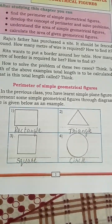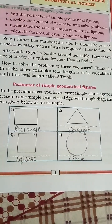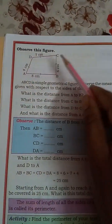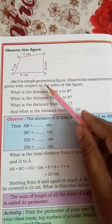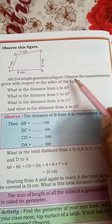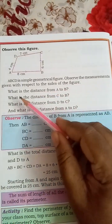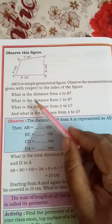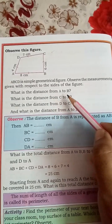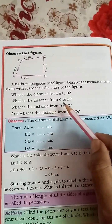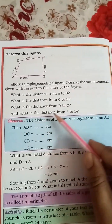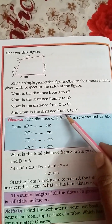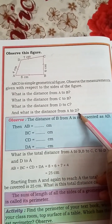Turn to the next page. Observe this figure — A, B, C, D is a simple geometrical figure. Observe the measurements given with respect to the sides of the figure. What is the distance from A to B? From C to B? From D to C? And from A to D?